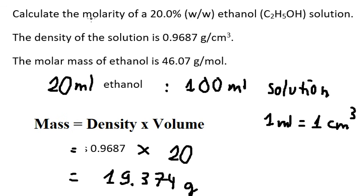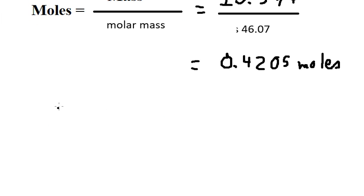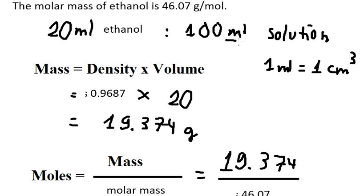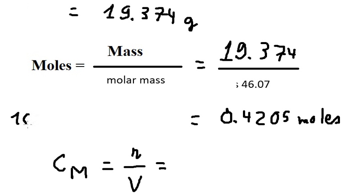And the formula of molarity should be CM equals to n divided by V. We need to know that this one should convert into liters, but this one we have in milliliters. So 100 milliliters equals to 0.1 liters.